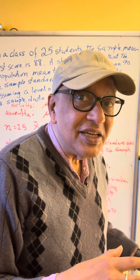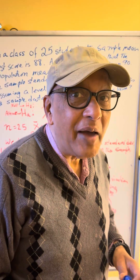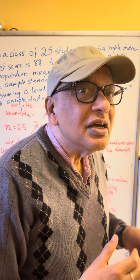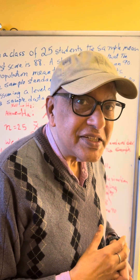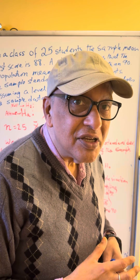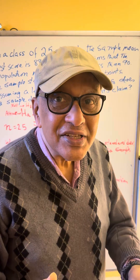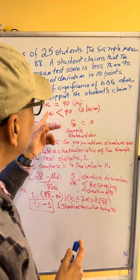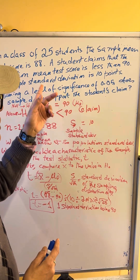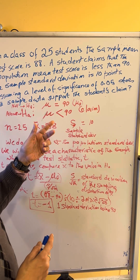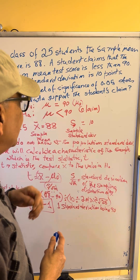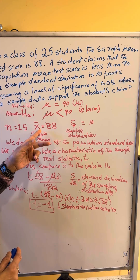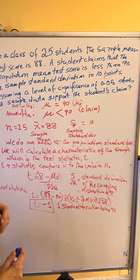In statistics, we look for evidence from the sample data. So we collect the sample data. In this case, we calculate the sample mean and sample standard deviation. Then we compare the sample mean to the value in the null hypothesis, which in this case was mu equal to 90. The student was claiming that the population mean score is less than 90. Sample size is 25, sample mean is 88, and sample standard deviation is 10.